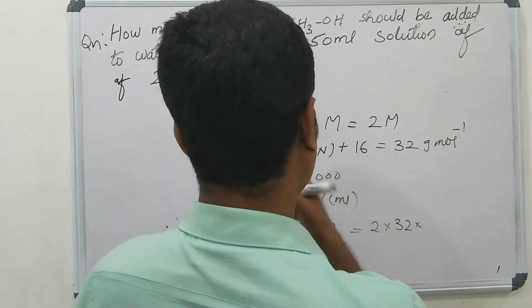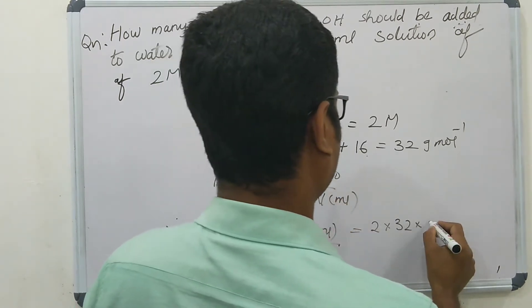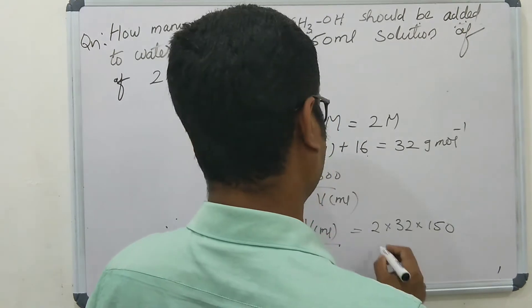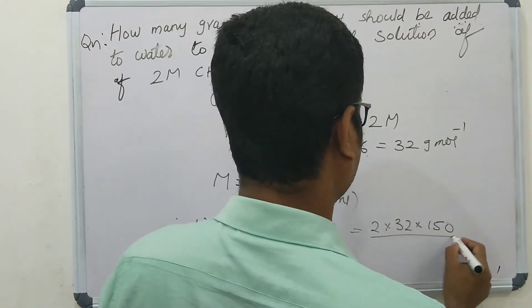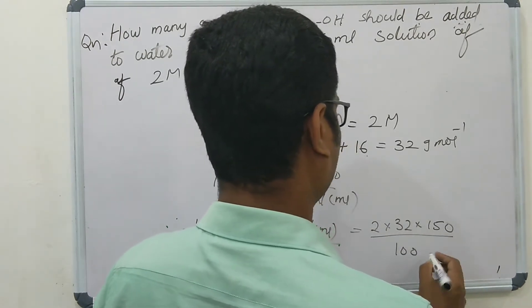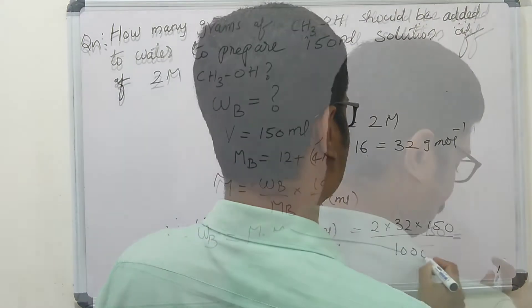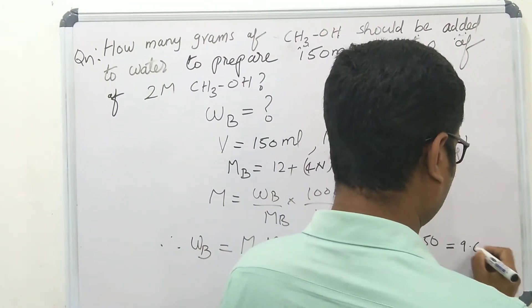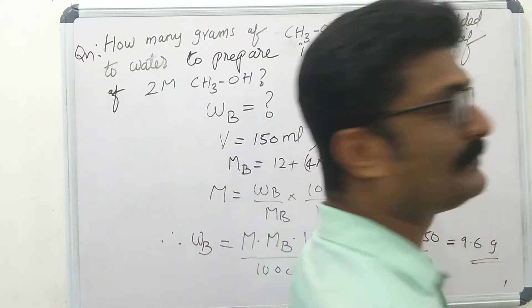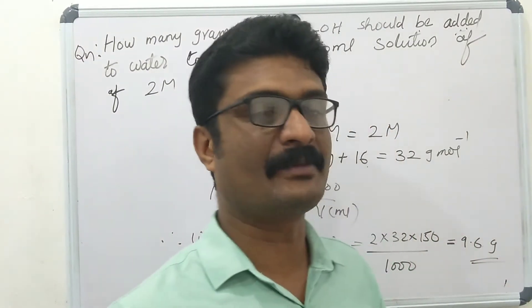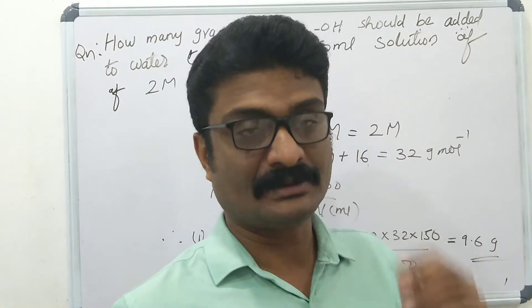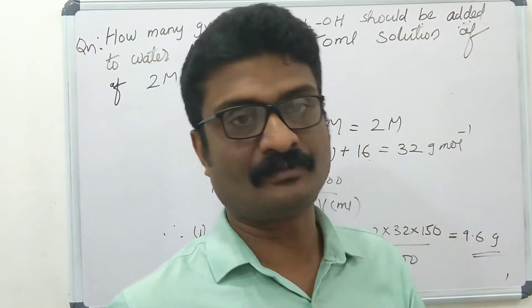Volume in ml is 150 ml, divided by 1000. Now we get the answer: 9.6 grams. Now the next problem is molality and mole fraction.